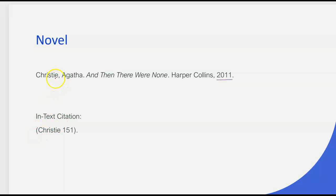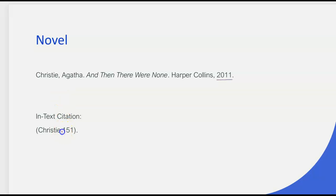For your in-text citation, what that would look like — if you are using this parenthetical citation in your paper with this citation on your works cited page — your in-text citation in the body of your paper will look like this: 'Christie' and then whatever page number you are citing. There's no comma, no 'p', nothing else. It's very clean — just Christie and then the page number.